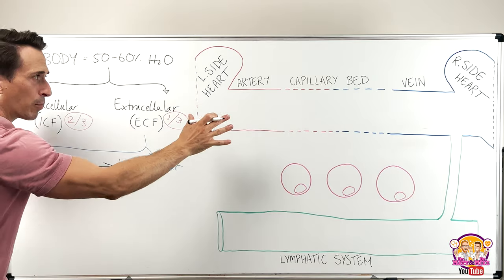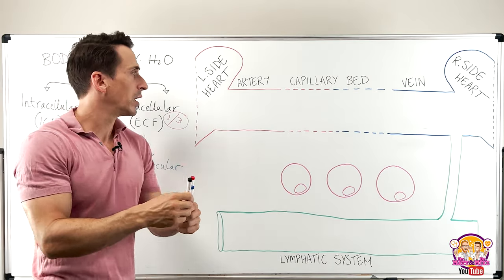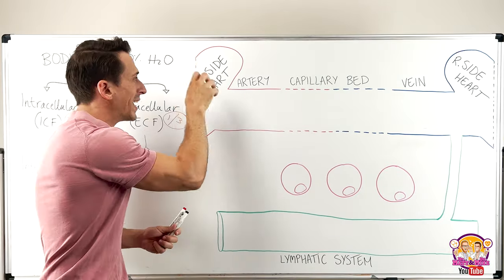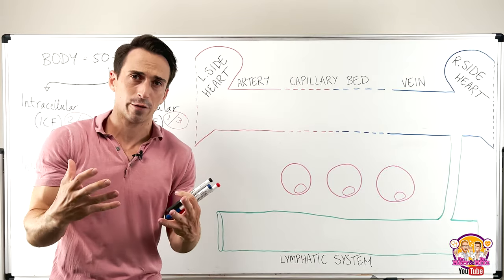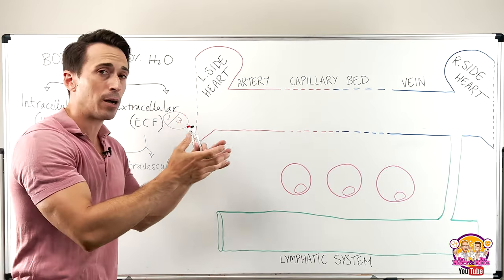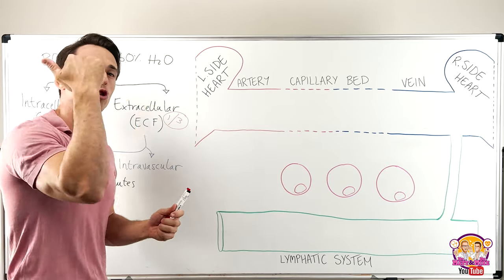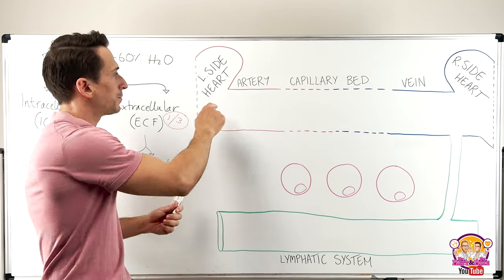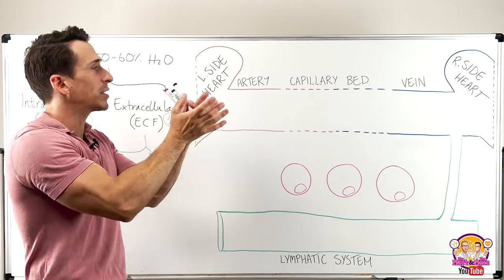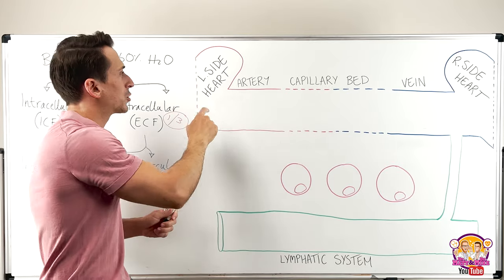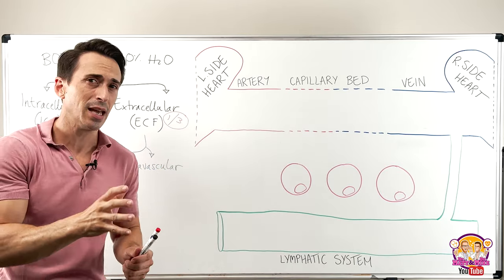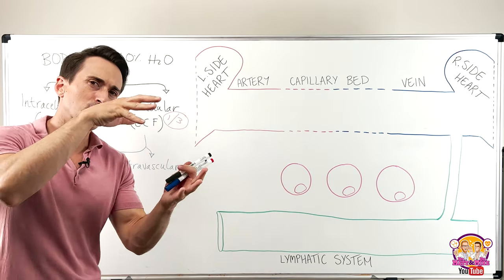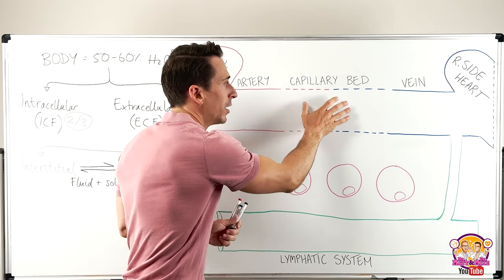Let's apply this to what I've drawn here. On the left-hand side of the heart — when it contracts it generates a huge amount of force, because it needs to deliver oxygen-rich, nutrient-rich blood to the tissues of the body. The highest force it generates is 120 millimeters of mercury. It pushes blood through large arteries, then smaller arterioles, and then it gets to a capillary bed.